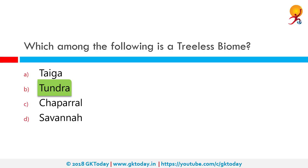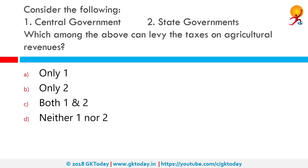Which among the above can levy taxes on agricultural revenues? By default, agricultural income is exempted from taxation and not included under total income. The central government cannot impose or levy tax on agricultural income — the exemption clause is mentioned under Section 10 of the Income Tax Act of 1961. However, the state government can charge agricultural tax. Income from agriculture within Rs 50,000 in a financial year will not be accounted for tax purposes; anything above that will be taxable. The correct answer is only the state governments.